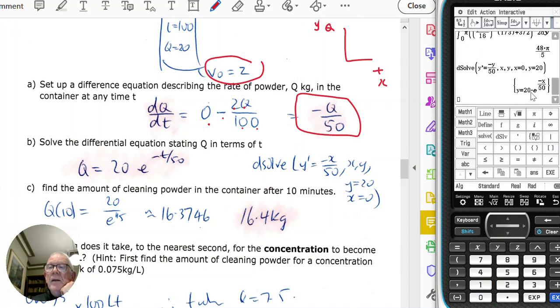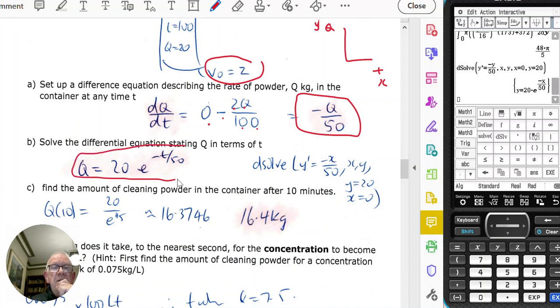And I go OK, and there is my general rule, that Q equals 20e to the minus t on 50, which is that rule there. Find the amount of powder after 10 minutes, sub in 10, and you'll end up with 16.4 kilograms.